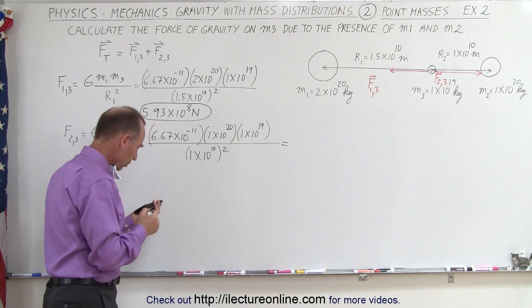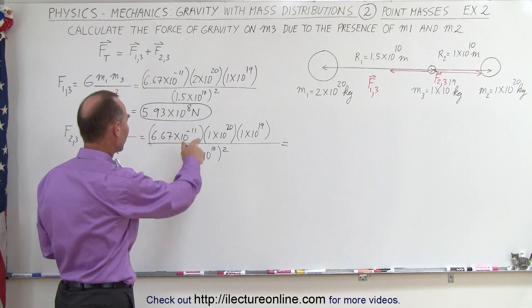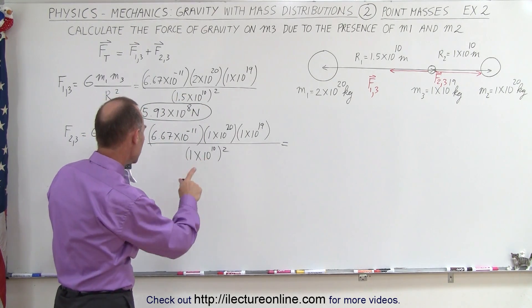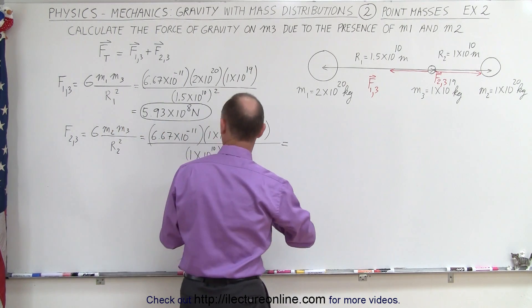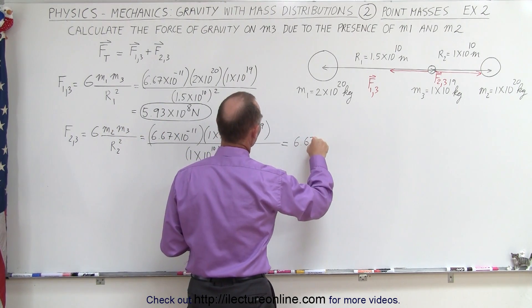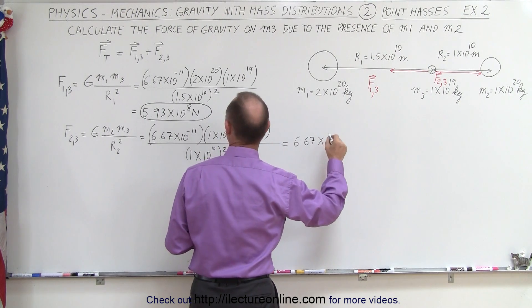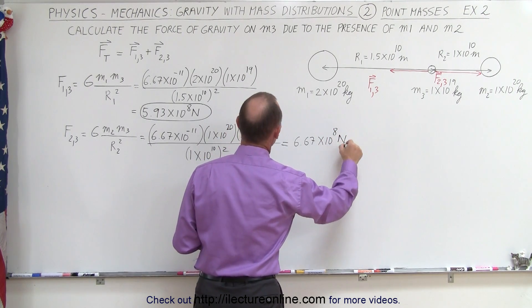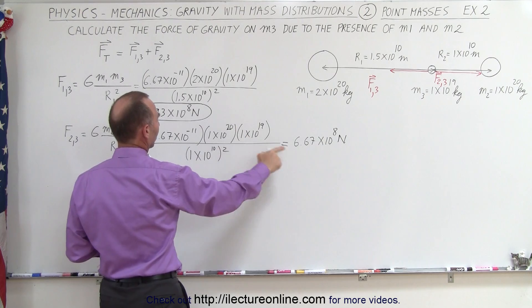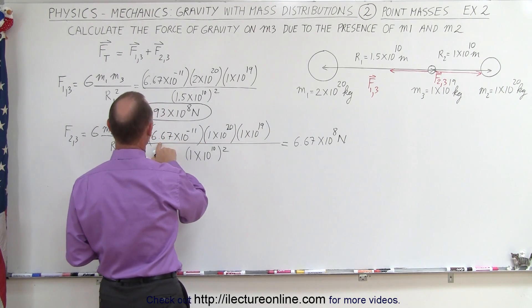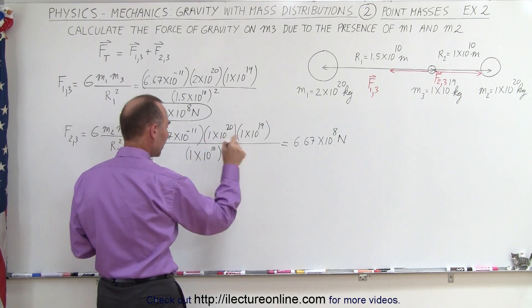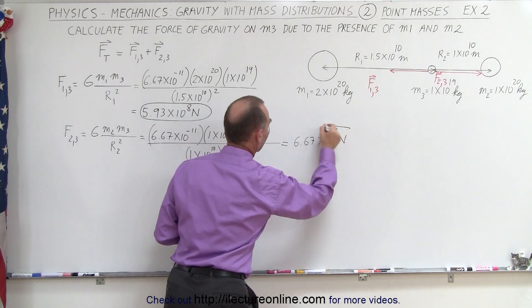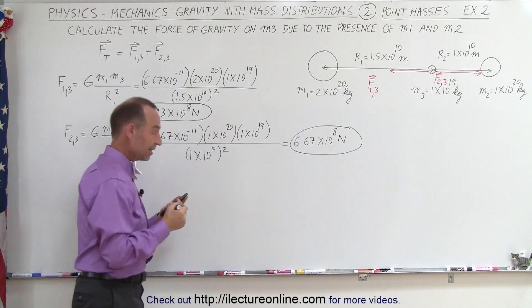And so we got 1s everywhere. That would be 6.67 times 10 to the 8 Newtons. So notice that magnitude-wise, we have 6.67 times 1 times 1. That would be right.